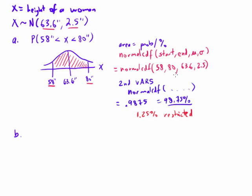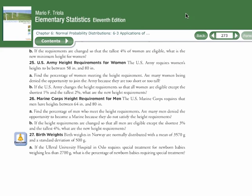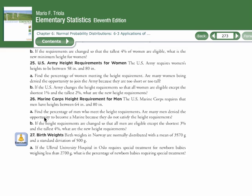All right, so let's take a look at question B now. So B says, if the height requirements are changed so that all women are eligible except the shortest 1% and the tallest 2%, what would be the new height requirements?